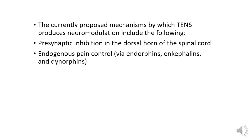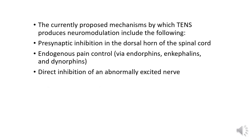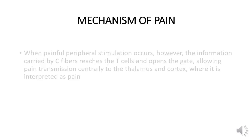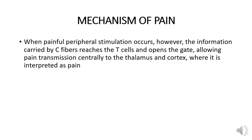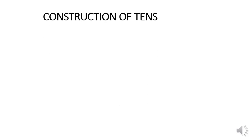Additional mechanisms include endogenous pain control via endorphins, enkephalins, and dynorphins; direct inhibition of an abnormally excited nerve; and restoration of afferent input. When painful peripheral stimulation occurs, the information carried by C fibers reaches the T cells and opens the gate, allowing pain transmission centrally to the thalamus and cortex, where it is interpreted as pain.